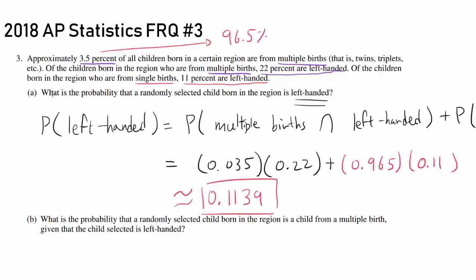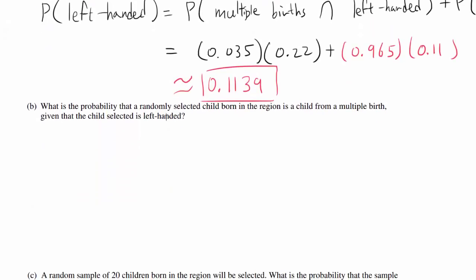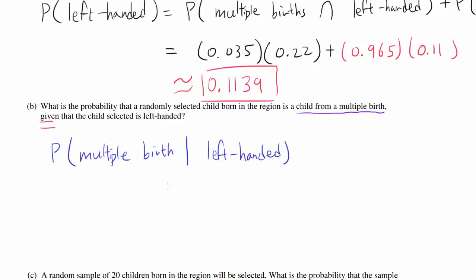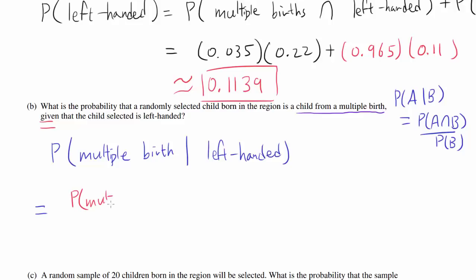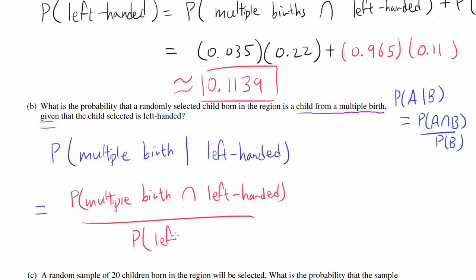Part B: What is the probability that a randomly selected child born in the region is from multiple births, given that the child is left-handed? We want to find the probability that the child is from multiple births given that the child is left-handed. We know that P(A|B) equals P(A and B) divided by P(B).